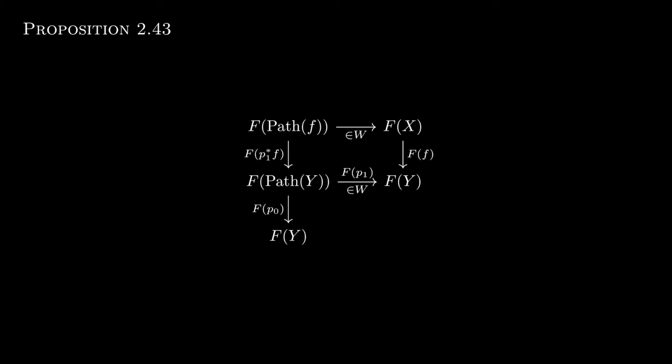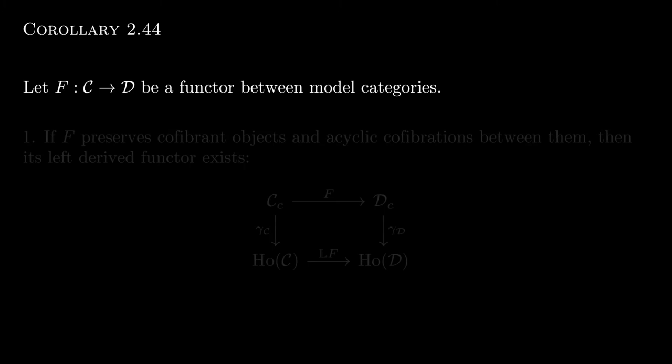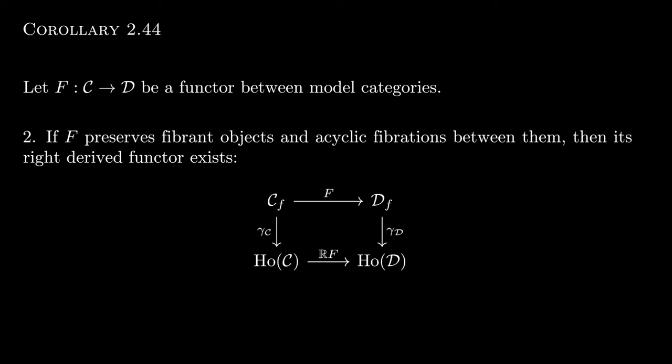If both C and D are model categories, we don't even need to consider all of D. It follows from what we've just discussed that the left derived functor exists as long as F preserves cofibrant objects and acyclic cofibrations between them. Dually, if F preserves fibrant objects and acyclic fibrations between them, then its right derived functor exists.